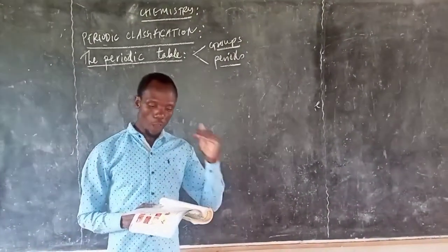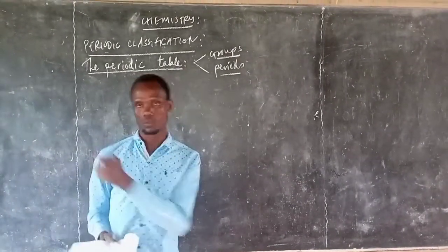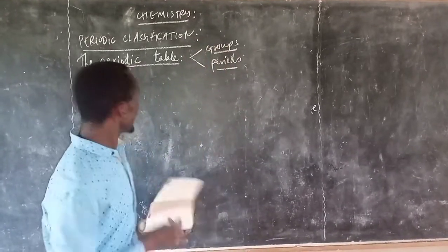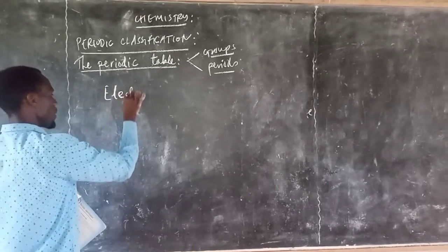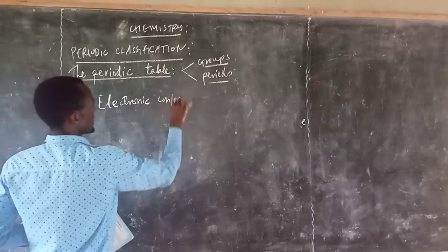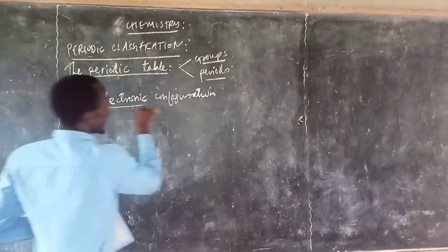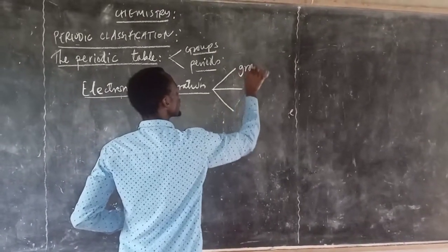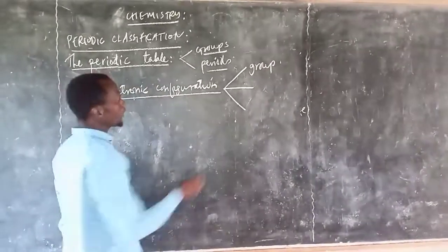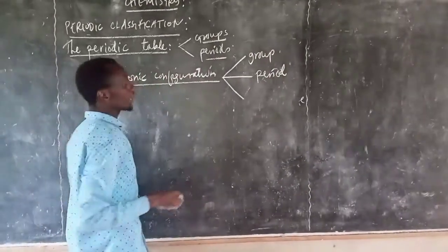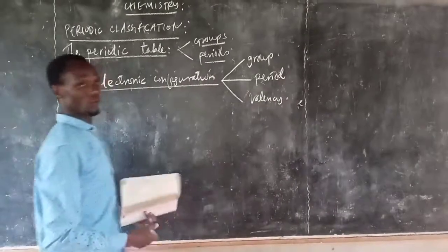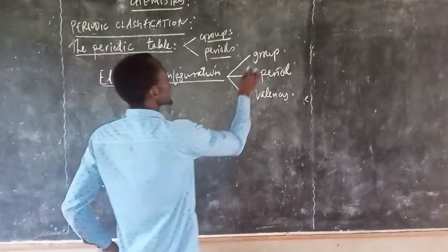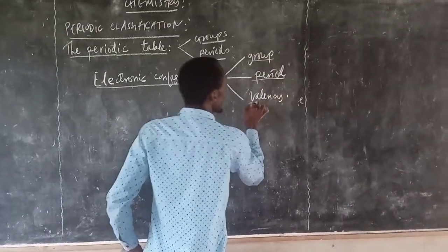Chemists have for a long time looked for a way on how they may group those elements. Before we go ahead, let us see what we call electronic configuration. Electronic configuration — how this electronic configuration can be used to determine three things: one, how it can be used to determine the group of an element; how it can be used to determine the period of an element; and how it can be used to determine the valence of an element.